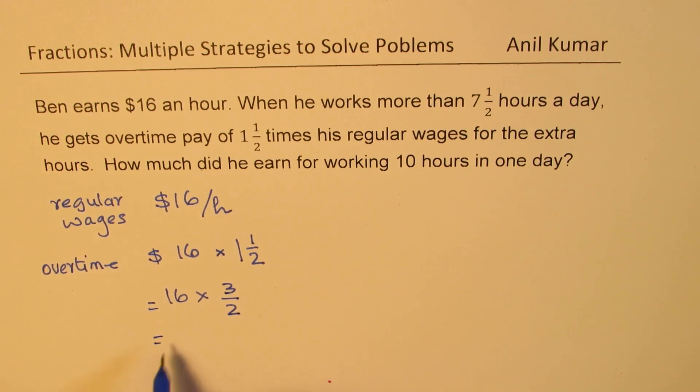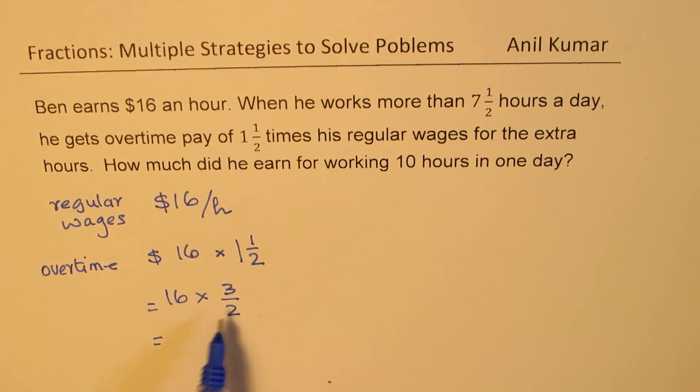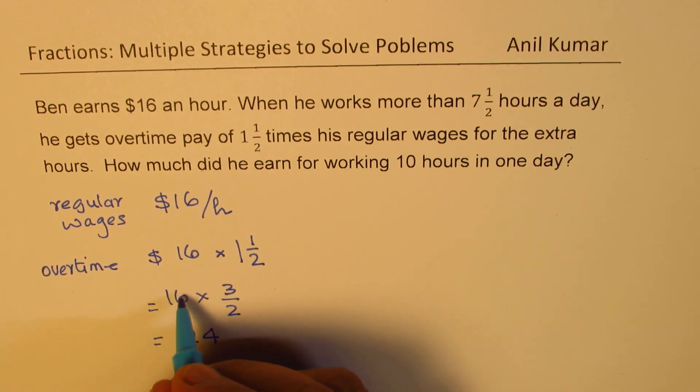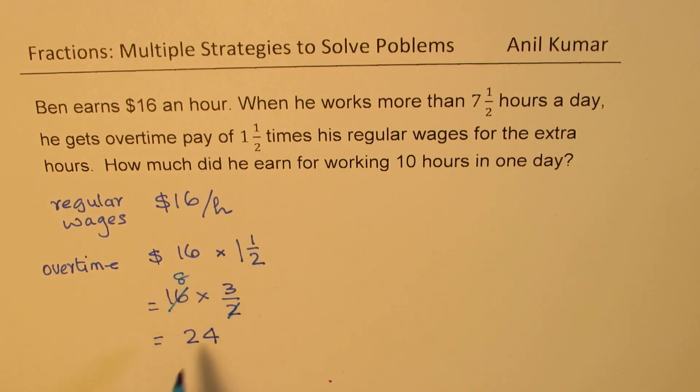And that gives you, you can first divide 16 by 2, get 8, and 8 times 3 as 24. So you could do either way. So I hope you understood the steps. What I did was, I first divided 16 by 2 to get 8, then multiplied 8 with 3 to get 24.